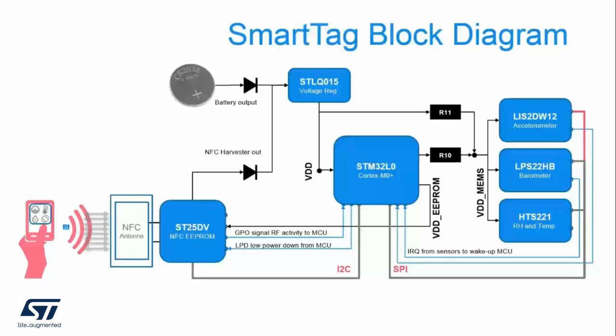Furthermore, the accelerometer and barometer can wake up the microcontroller when a certain sensor event has been triggered. Note that this is not available on the relative humidity and temperature sensor — only the barometer and accelerometers in this configuration. Besides powering the ST25DV NFC dynamic tag IC directly, the microcontroller can also put the ST25DV in a low-power mode consuming less than 1 microamp by driving the LPD signal high. The GPIO signal alerts the microcontroller when an RF field is nearby or RF commands are being sent.